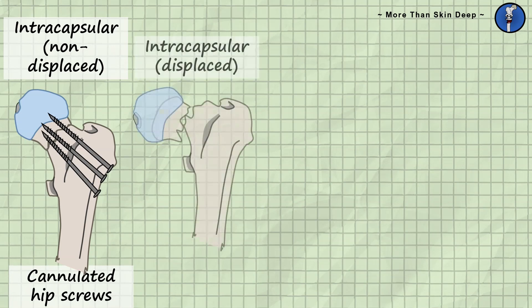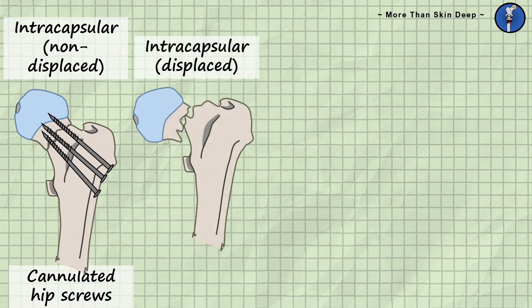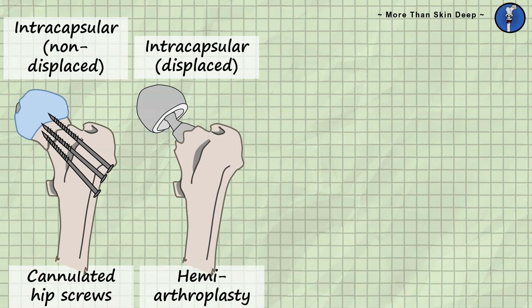If the head has become displaced, cannulated hip screws usually won't hold the two parts together adequately. Thus, the surgeon will often opt to replace the head of the femur with a prosthetic part in a procedure known as a hemiarthroplasty. This may also be used if the patient is particularly frail and unlikely to benefit from internal fixation.